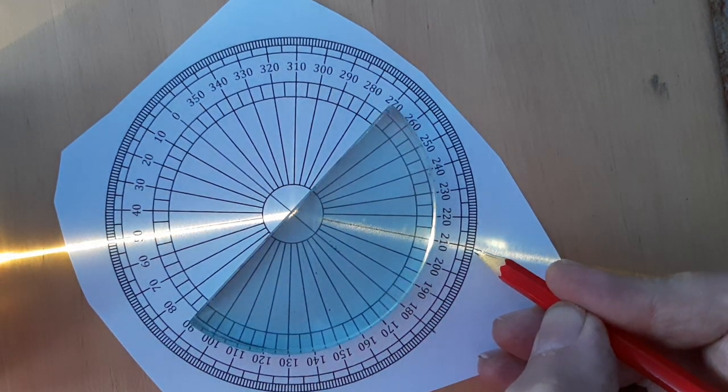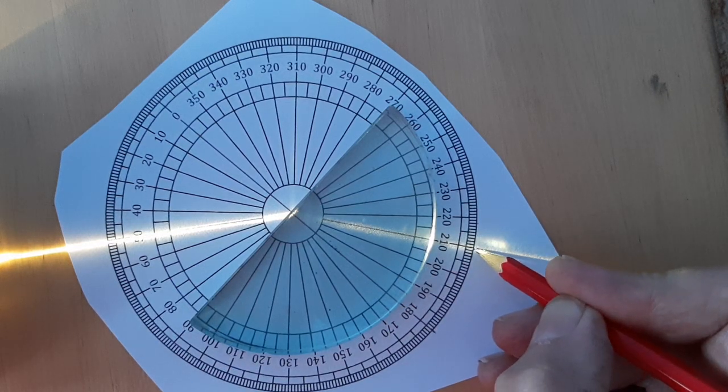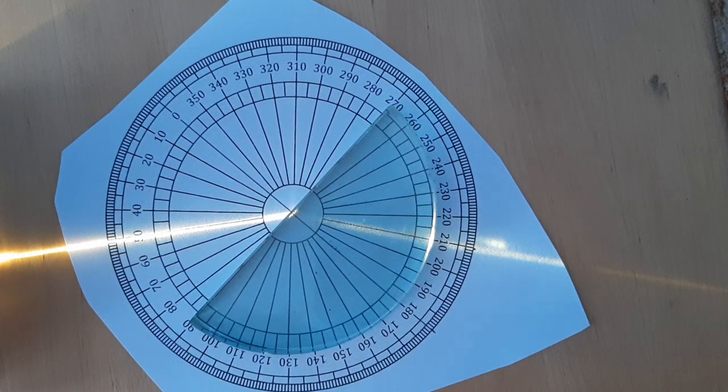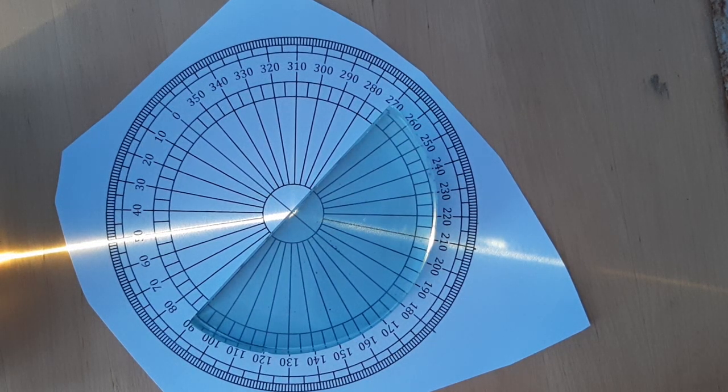And then we're coming round to here. And we're trying to judge the best we can the center of that bright area. And I think that's coming out at 210, which is an angle of refraction of 30 degrees. So, we're just going to use those to make one estimate of the refractive index.